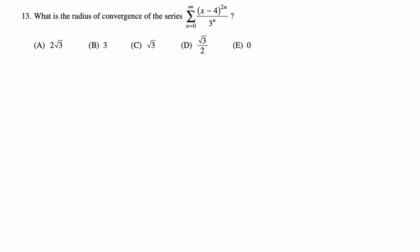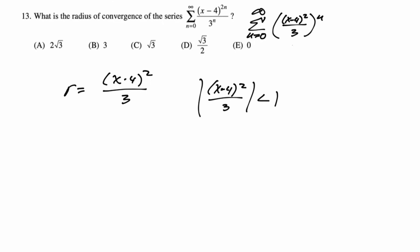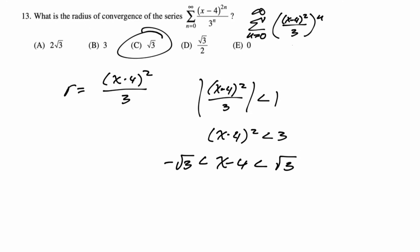What is the radius of convergence? You could do the ratio test, but looking closely it's actually geometric — you can write it as ((x − 4)²/3)^n. So r = (x − 4)²/3, and we need |（x − 4)²/3| < 1, meaning (x − 4)² < 3. Square root both sides: |x − 4| < √3. The radius is √3.